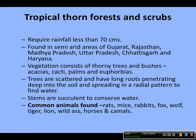The stems are succulent to conserve moisture — their stems have a structure that prevents moisture from escaping. Common animals found here are red mice, rabbits, fox, wolf, tiger, lion, wild ass, horses, and camels.